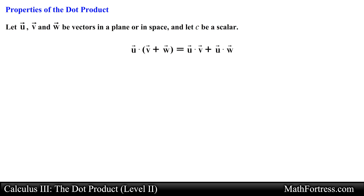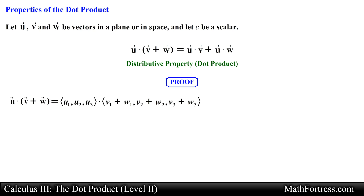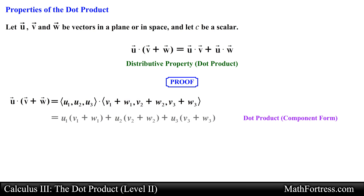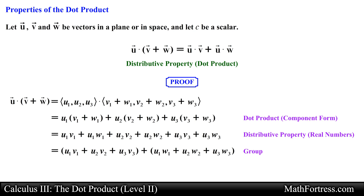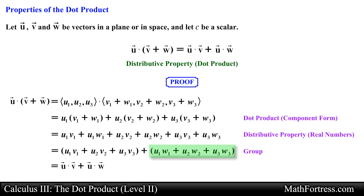The next property is u dot (v + w) = u dot v + u dot w — the distributive property for dot products. To prove it, we rewrite the vectors in component form and apply the vector component definition of the dot product. We then distribute the x, y, and z components of vector u and group corresponding terms, where the first grouping represents u dot v and the second represents u dot w.